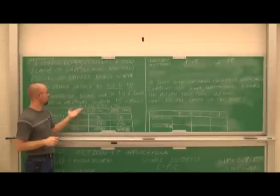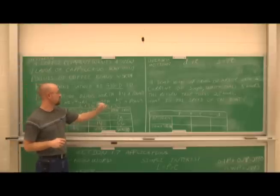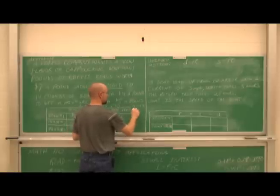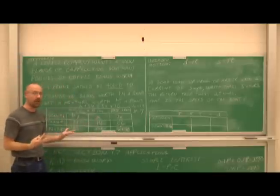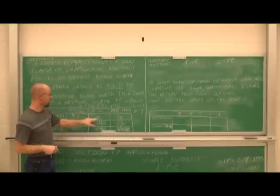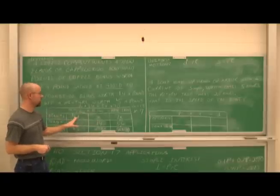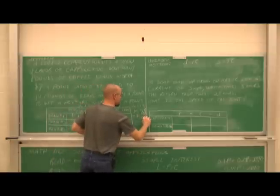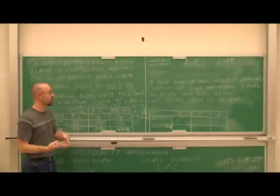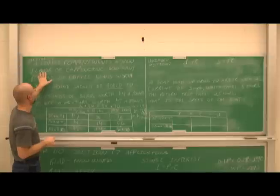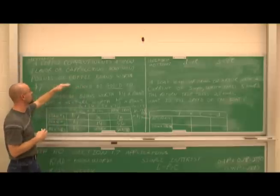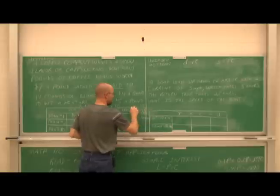Now we solve: subtracting 5x from both sides and subtracting 56 from both sides gives 2x = 14, so x = 7. But 7 what? We need our units. The x represented the number of pounds of the $7 beans. So the answer is 7 pounds of $7 beans.